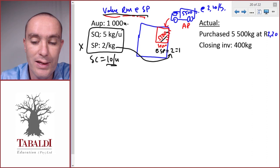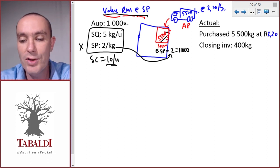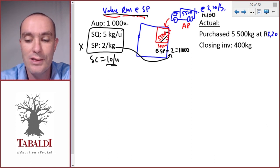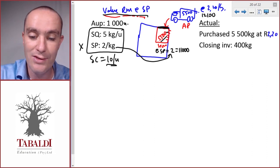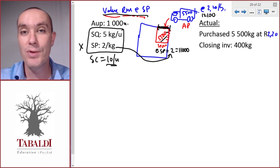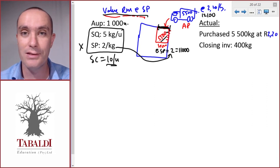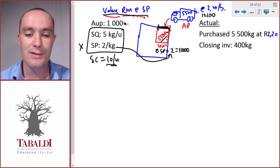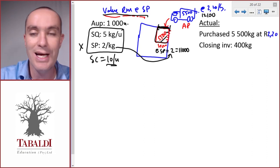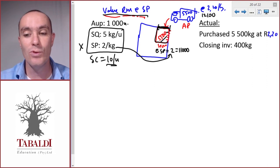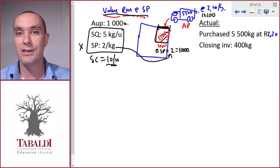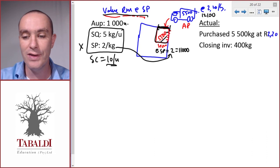We purchased it at 220 per kilogram, so 5,500 times 220 equals 12,100. There's a variance that occurs immediately when the materials enter the gate — when we buy it. That makes sense because the purchasing department caused this variance by purchasing at the wrong price. If we valued at actual price, there would be no variance at that point; everything would come in at the same value. The variance would only occur later when we use it, which doesn't make sense — it's a price variance, not a usage variance.